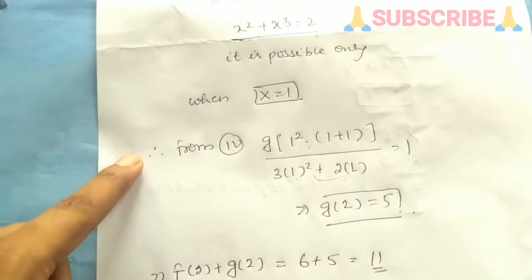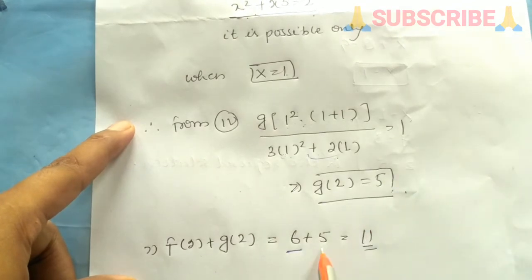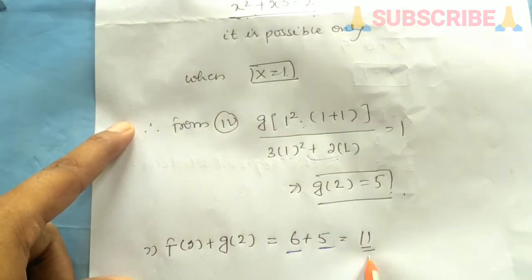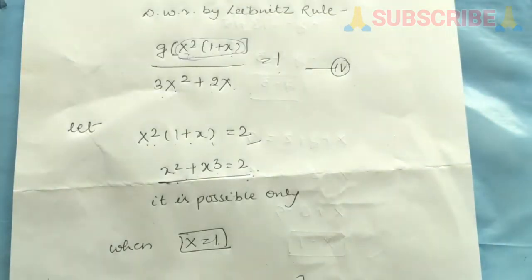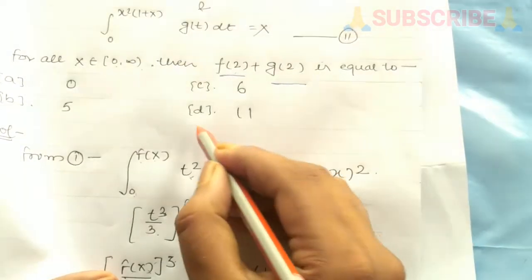So we need to get f(2) + g(2). The f(2) value is 6, and the g(2) value is 5. We add both: f(2) + g(2) = 6 + 5 = 11. That means option D is correct.